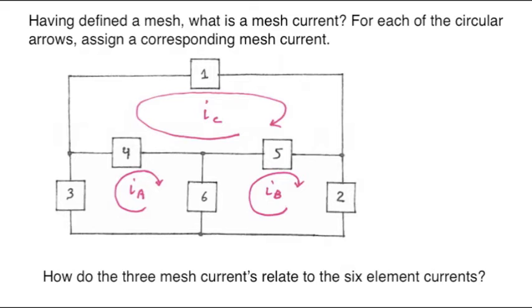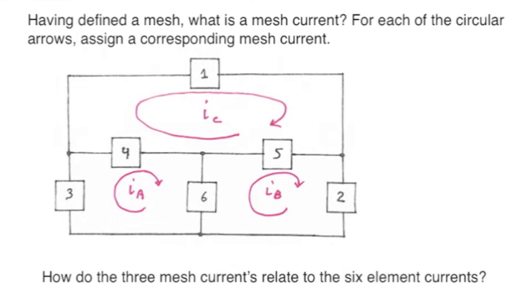How would those 3 mesh currents relate to the 6 element currents? We can note that some of the elements, like element 1, are only in one mesh, whereas other elements, like element 4, are shared between two meshes.